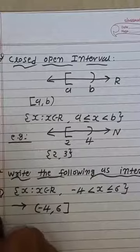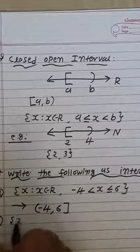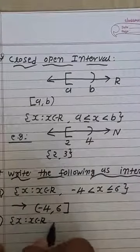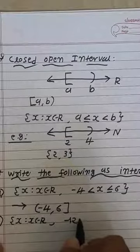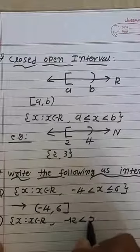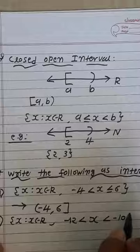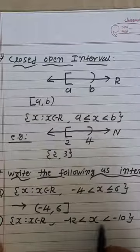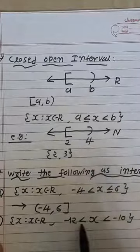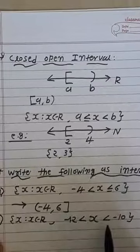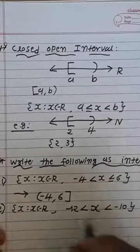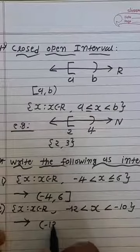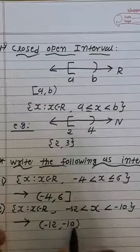Second question: {X | X belongs to R, -12 < X < -10}. On both sides, strictly less than form is present. So we represent it in open interval as (-12, -10).